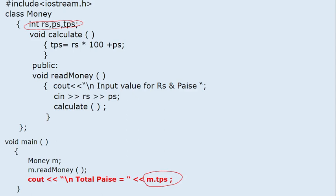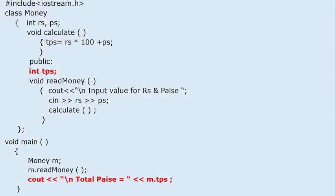So we cannot access it directly. If any member variable we want to access outside of the class, its scope must be public. We can move TPS to the public section — now we can access TPS. This is one method. But my dear students, in real life we never do it like this. We never change the scope of member variables unless there is no other way.